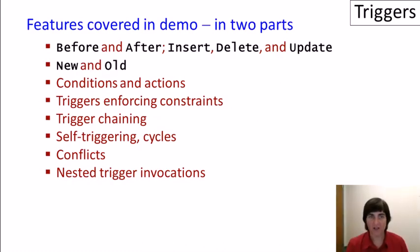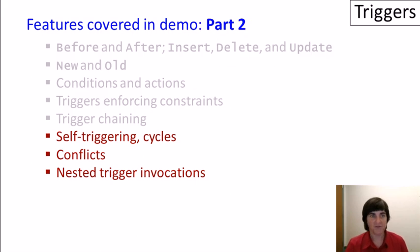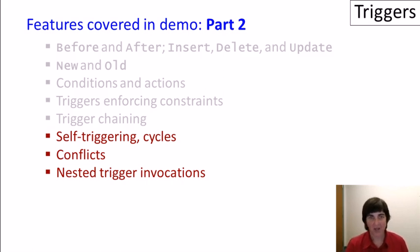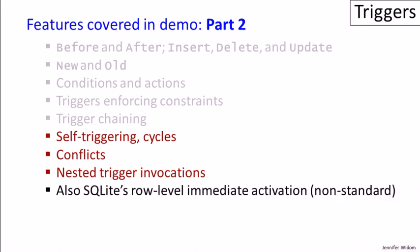Overall, here's the long list of features being covered in our two-part demo. We covered the first five features in part one. So in part two, we'll be talking about self-triggering triggers, triggers that have cyclic behavior, conflicts — meaning when we have multiple triggers triggered at the same time — and nested trigger invocations, when the action part of a trigger triggers additional triggers. Finally, we'll also demonstrate SQLite's row-level immediate activation, which doesn't follow the standard.